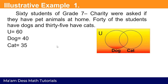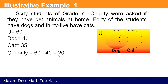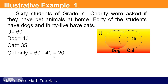Now, how are we going to solve? If we are going to find the number of cats only, we subtract 60 minus 40 equals 20. So 60 is our universal set, 40 is the number of dogs, and we get 20 for the number of cats only. On our Venn diagram, we place 20 on the right side, in the set of cats.